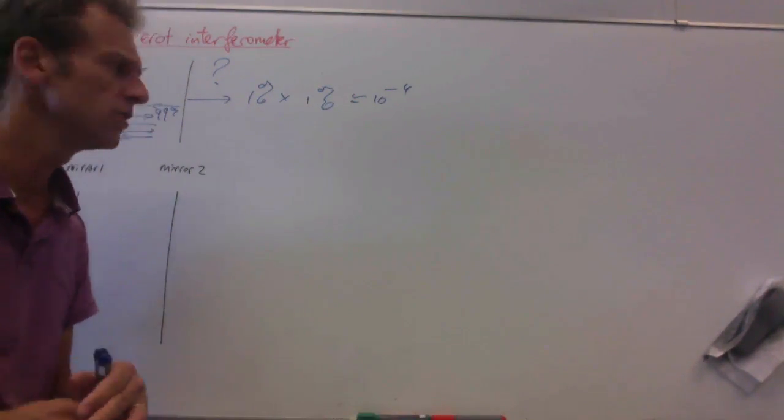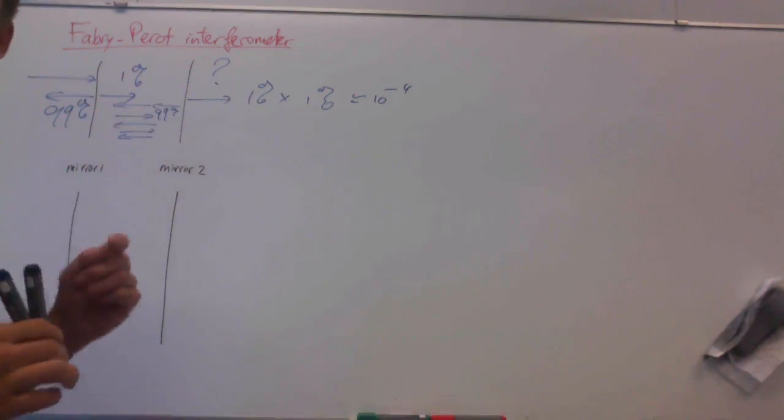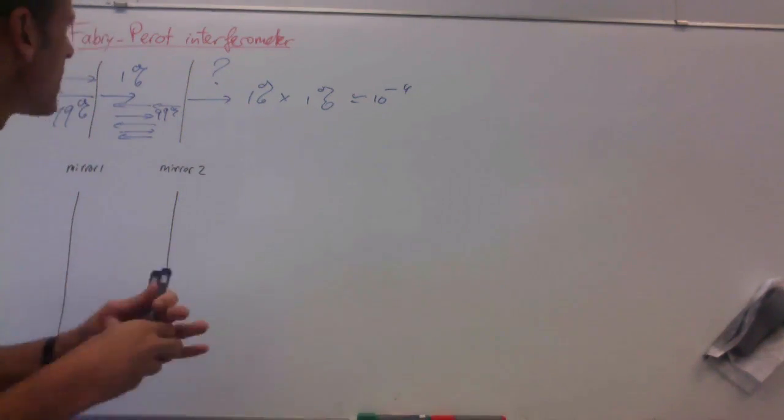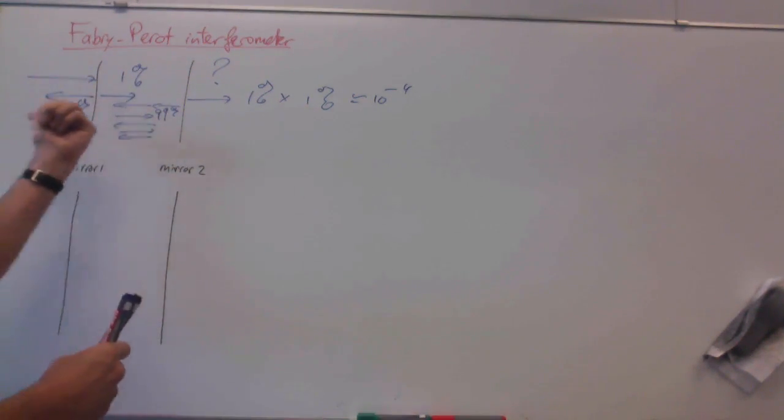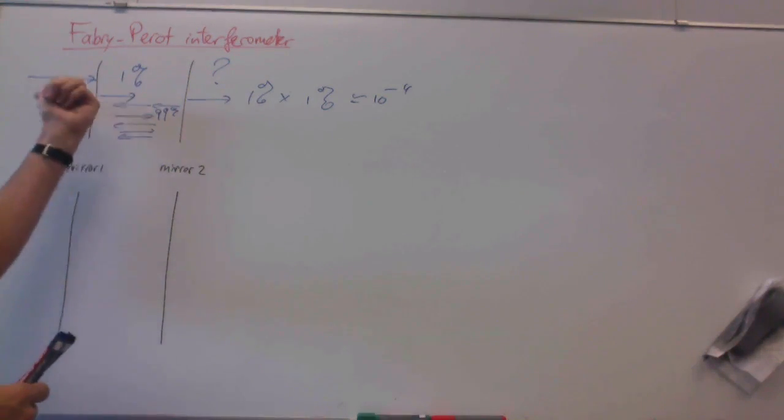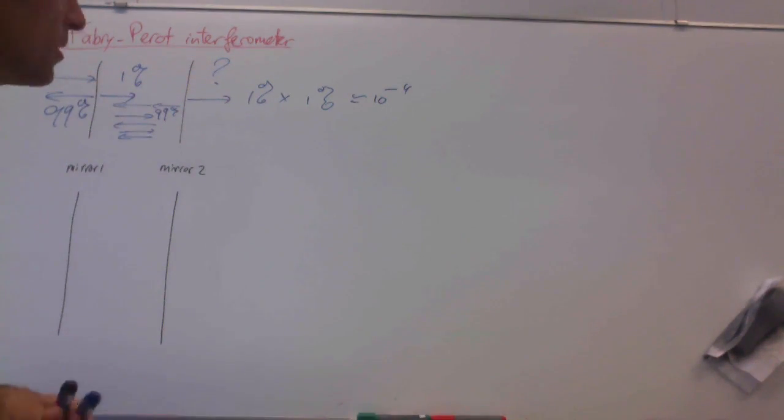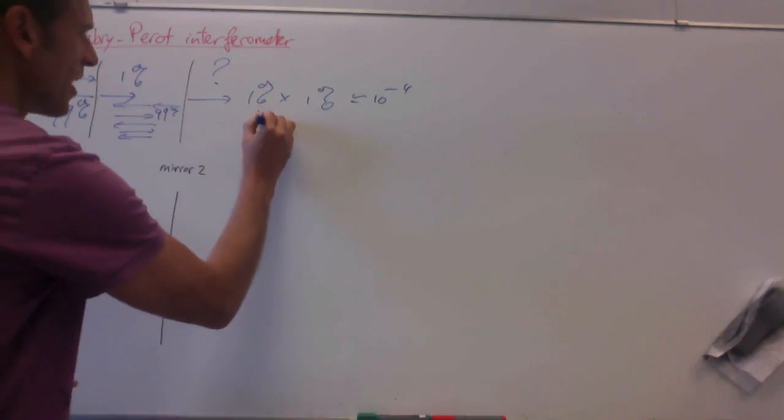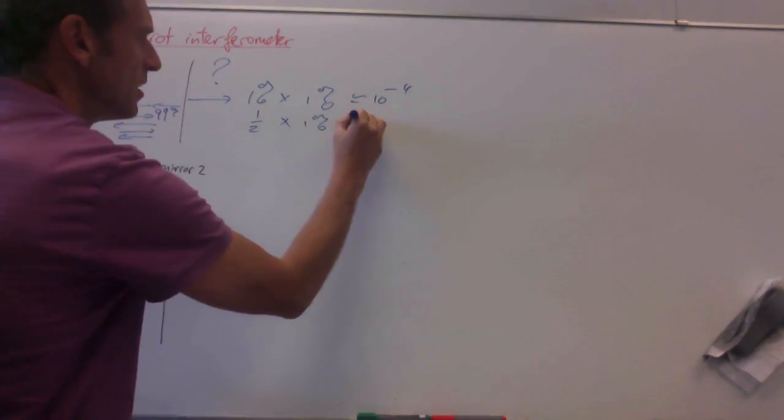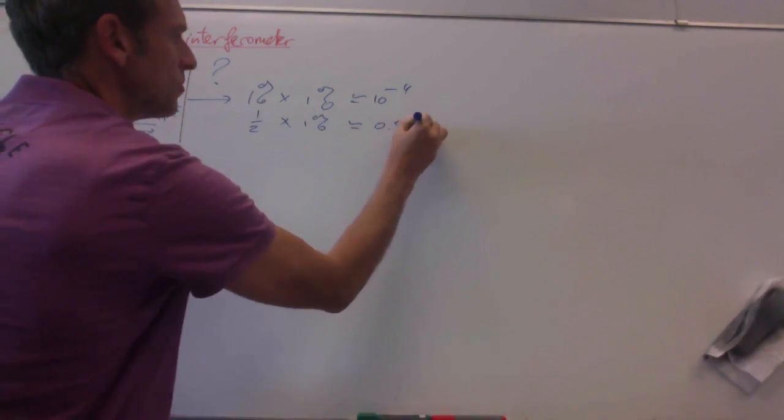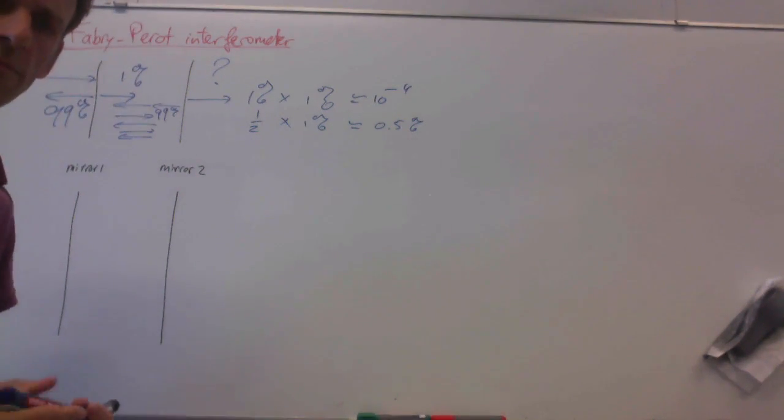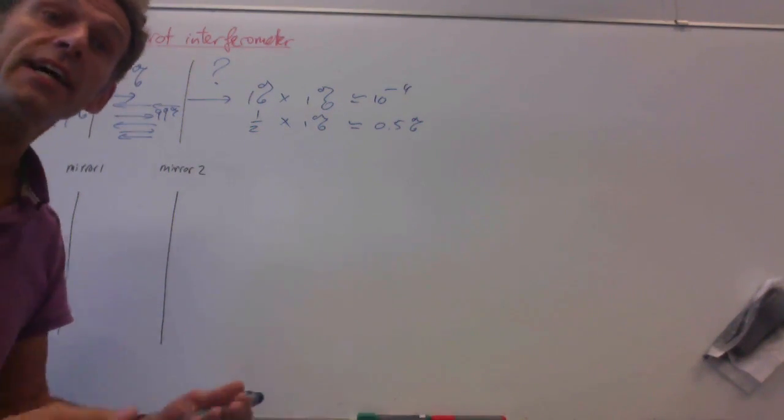So on second thought, you might say, well, if this light bounces up and down, then half of the time it gets transmitted through the left mirror, half of the time through the right mirror. So maybe you just get half of 1%, which is like 0.5%. Even that answer is not correct.